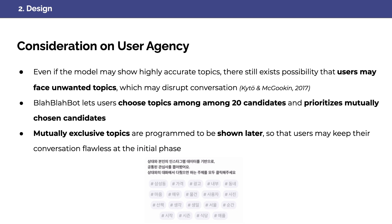In this space, we consider user agency to be crucial, since users may still face unwanted topics which may be detrimental to the conversation. As such, BlaBlaBot prioritizes words by letting users first choose word candidates, and putting mutually exclusive topics to be shown later.